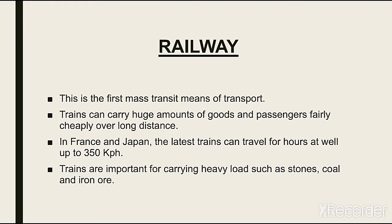Railways کو اگر first mass mean of transport کہیں تو غلط نہیں ہوگا، کیونکہ اس کے ذریعے بڑی تعداد میں انسانوں کے ساتھ ساتھ بھاری سامان بھی ایک جگہ سے دوسری جگہ منتقل کیا جاتا ہے۔ اسے تعمیر کرنا اور repair کرنا expensive اور مشکل ہے، لیکن ایک دفعہ تعمیر ہو جائے تو بڑی تعداد میں لوگ اور سامان کم پیسوں میں carry کیا جا سکتا ہے۔